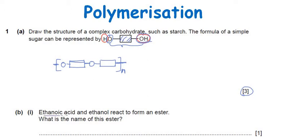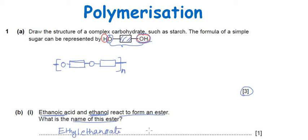The next question says ethanoic acid and ethanol react to form an ester. What is the name of the ester? In naming an ester, the alcohol part is named first — ethanol — so our name starts with ethyl. Then the carboxylic part is written as ethanoate. So ethyl ethanoate is the name of the ester formed.